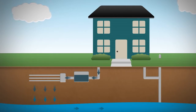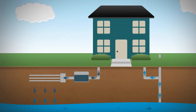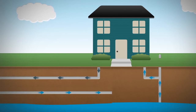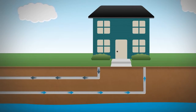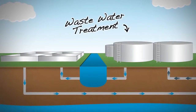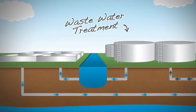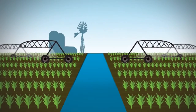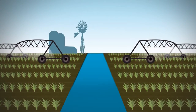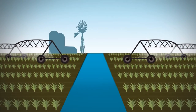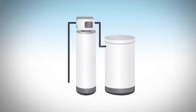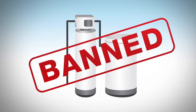With well and septic systems, that salt may end up in groundwater and back into your well. With city sewers, it flows to a wastewater treatment facility and then to our lakes, streams, and rivers, damaging our environment. As a result, some areas restrict or even ban the use of salt-based water softeners.